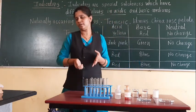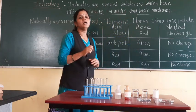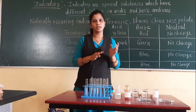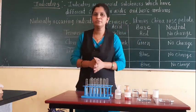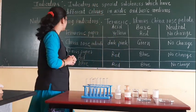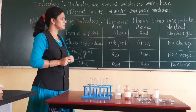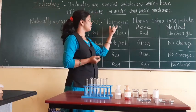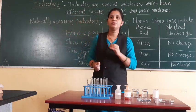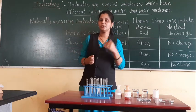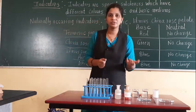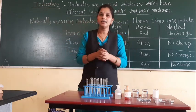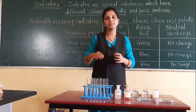Now, some indicators are naturally occurring indicators and some are human-made indicators. First we will discuss naturally occurring indicators. The first one is turmeric — everyone knows turmeric because we use it every day. Your mother uses turmeric in the kitchen. So turmeric can be used as an indicator.